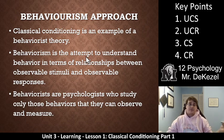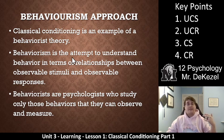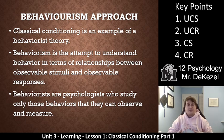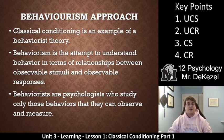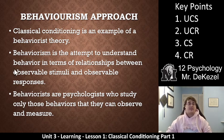If you remember back to Unit 1, we talked about different approaches. This is a behaviorism approach. Classical conditioning is an example of behaviorist theory because behaviorism is an attempt to understand behavior — not why it happens or how it happens, but to modify and understand the relationship between observable stimuli and observable responses. Behaviorists are psychologists who study only the behavior that you can see and measure. Classical conditioning is a behaviorist approach because we are aiming to change behavior and not discuss the person behind it or the reasons why.